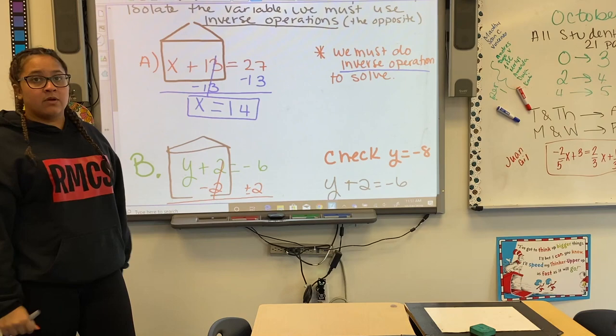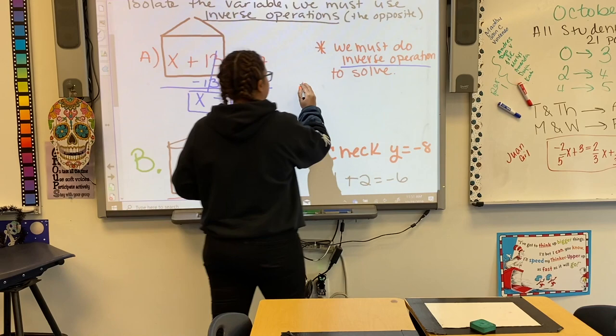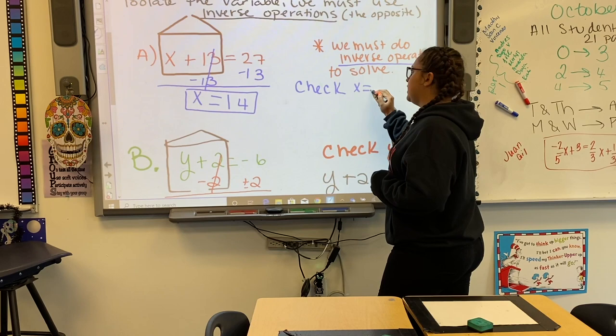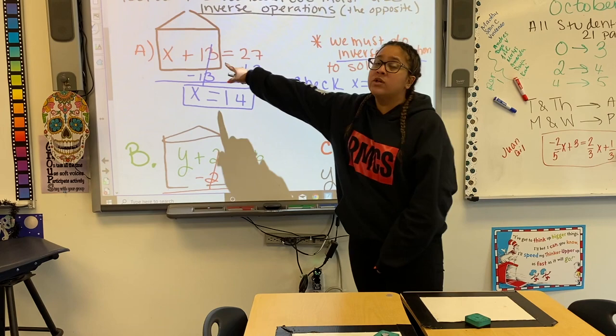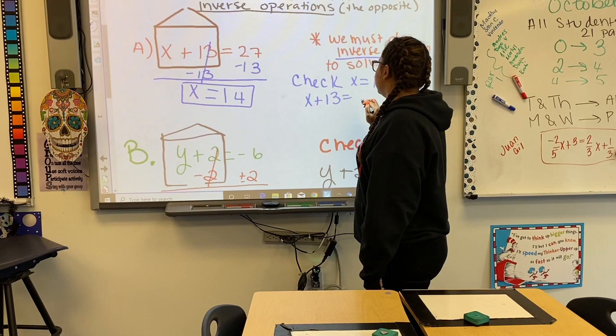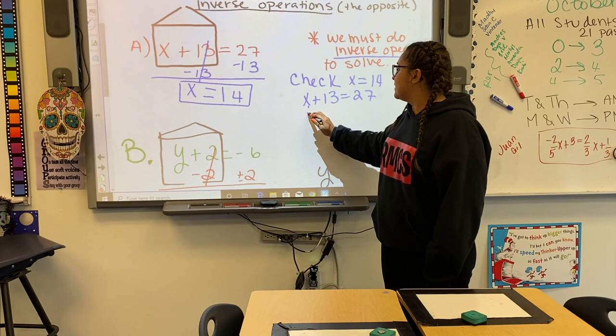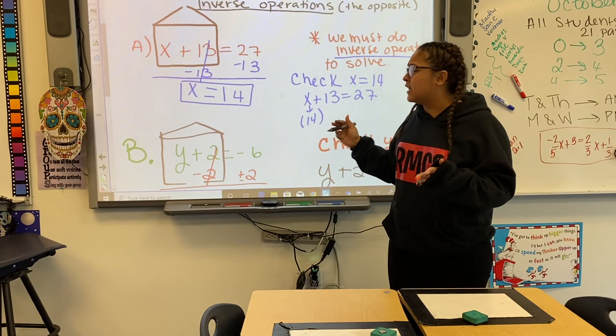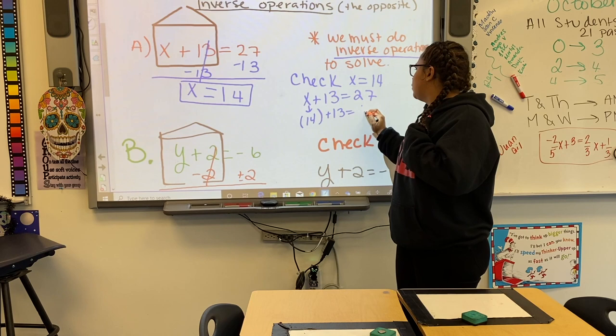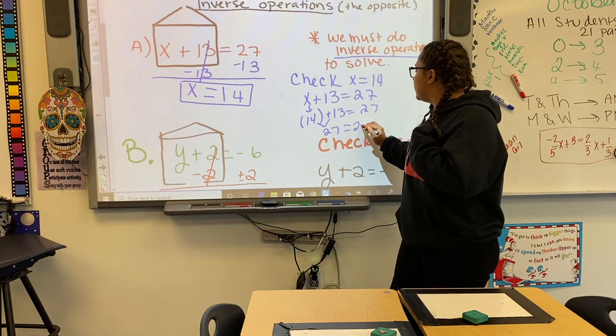x equals 14. And again, we should always be checking our answers. We're going to write 'check' and state our answer: x equals 14. We rewrite the original problem: x plus 13 equals 27. Wherever we see an x, we replace it with what we found, which was 14. So instead of x, I say 14 in parentheses, plus 13 equals 27. What is 14 plus 13? It's 27. Does 27 equal 27? It does. Therefore, we got the right answer.